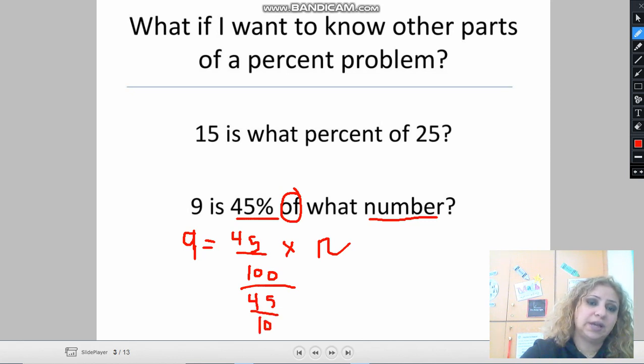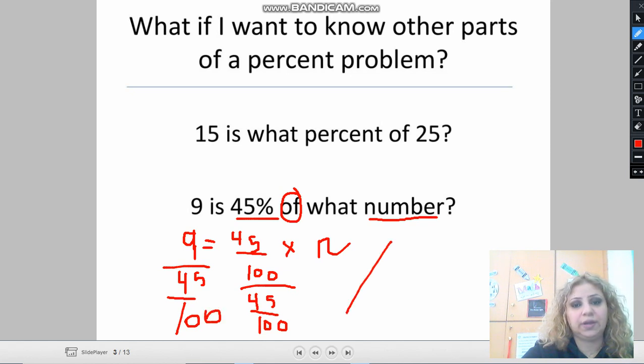Also on the other side, I am going to write 9 divided by 45 over a hundred. I can use a division bar or I can use the division sign. Let's solve now here. 9 divided by 45 out of a hundred.